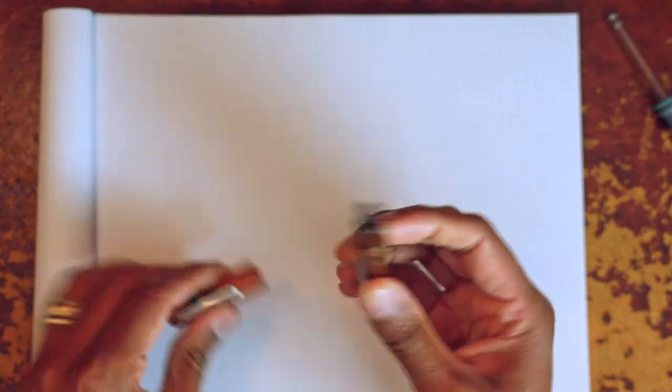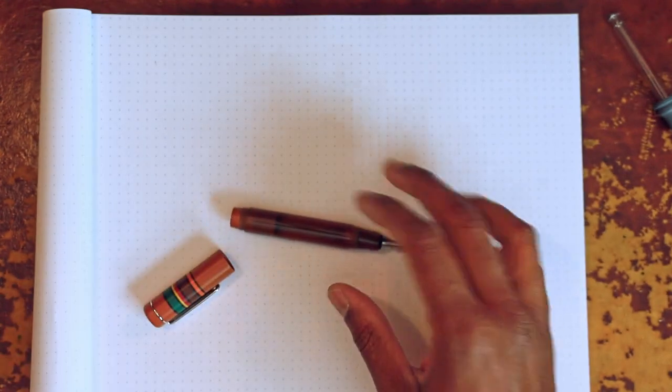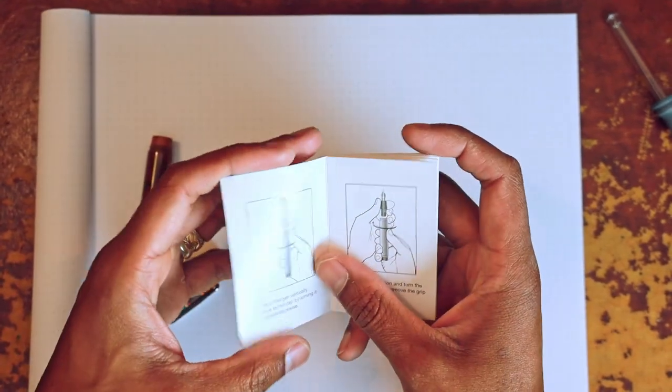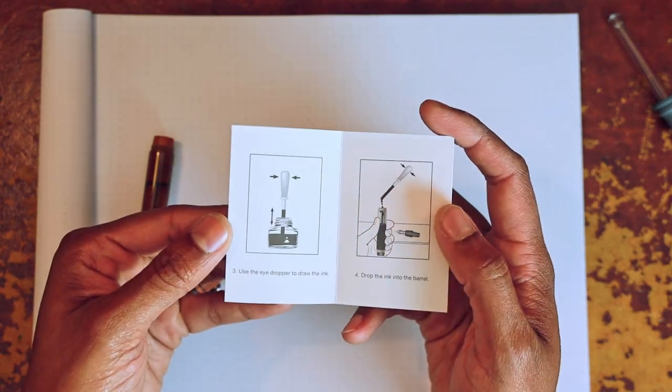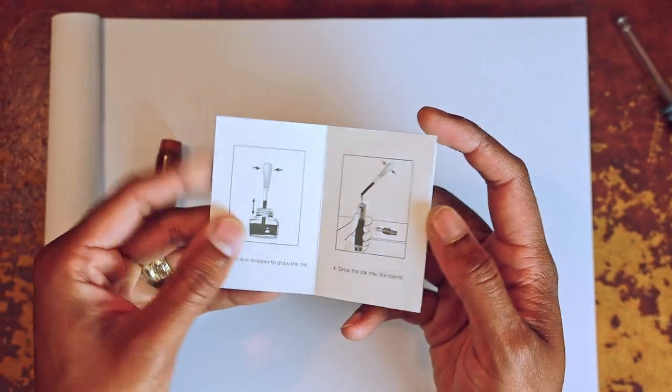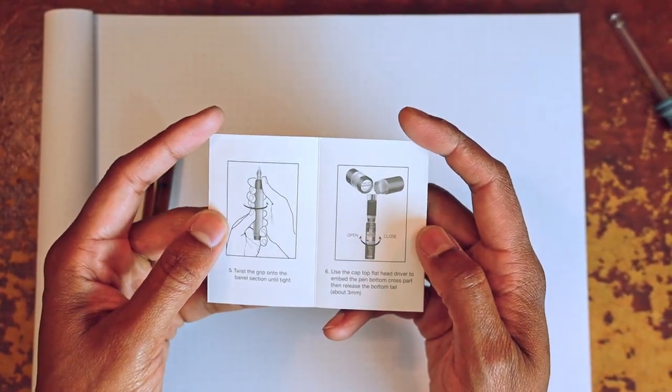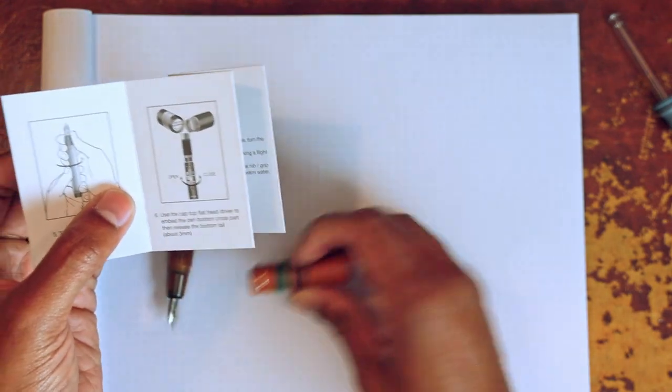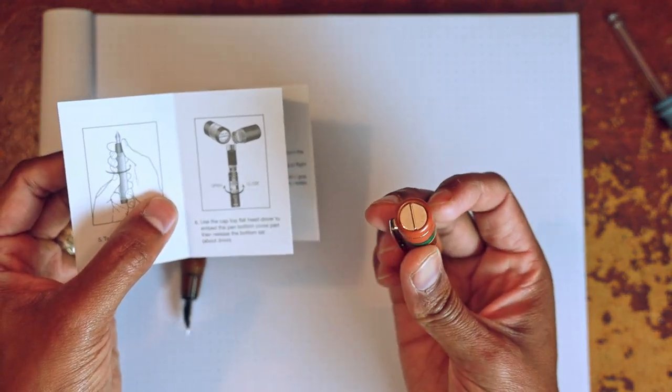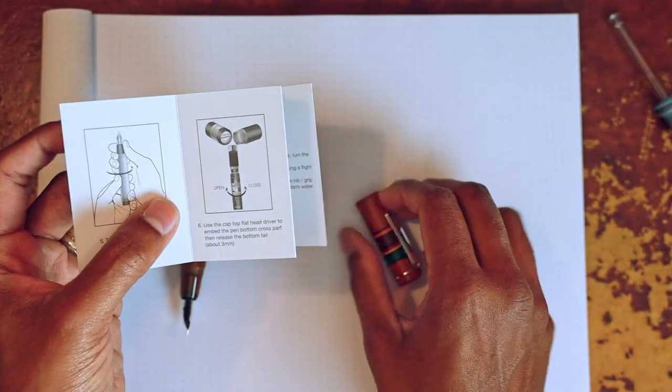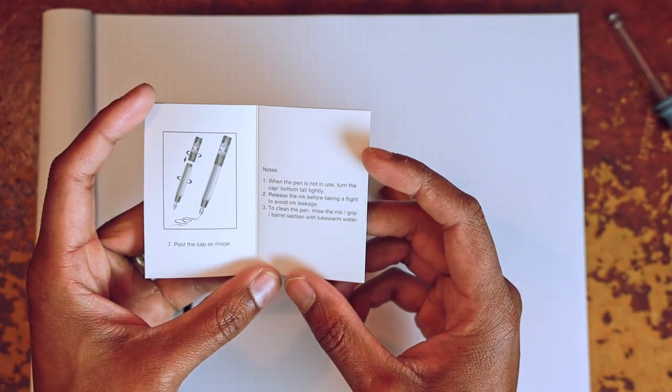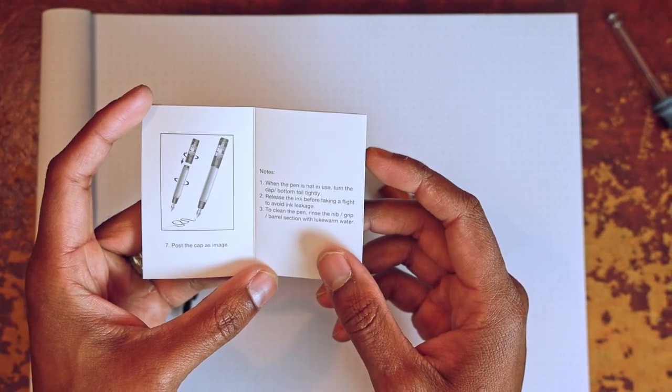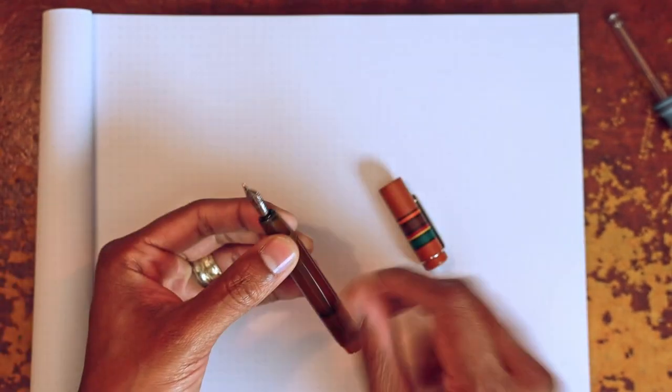Now, I haven't actually used the eyedropper mechanism before, but the idea here is to fill the pen body, and it's my first time doing that. So, we're going to be taking the grip section off, using an eyedropper, and filling it up into the barrel, twisting it back on. Using the cap, the top flathead driver, we're going to be opening the bottom of the pen to release some air into it, in order for it to draw the ink into the nib section as well. So, seems fairly straightforward, so let's just go ahead and dismantle the pen.